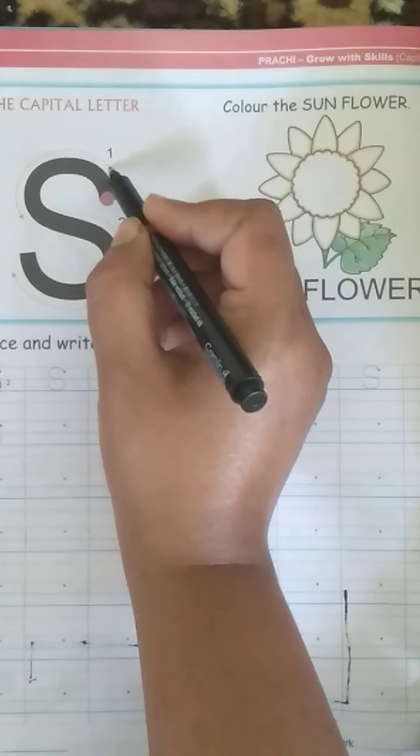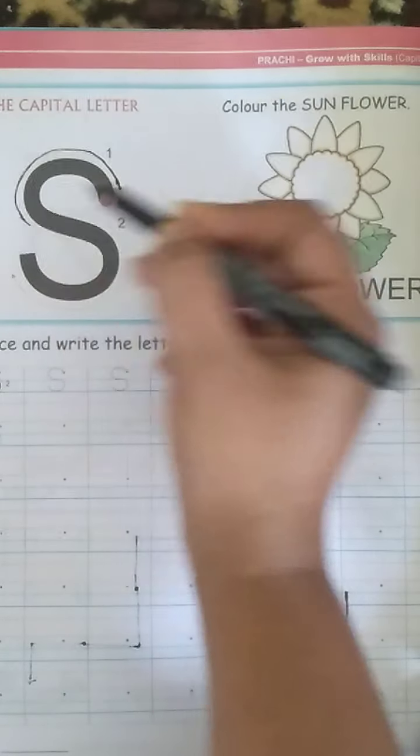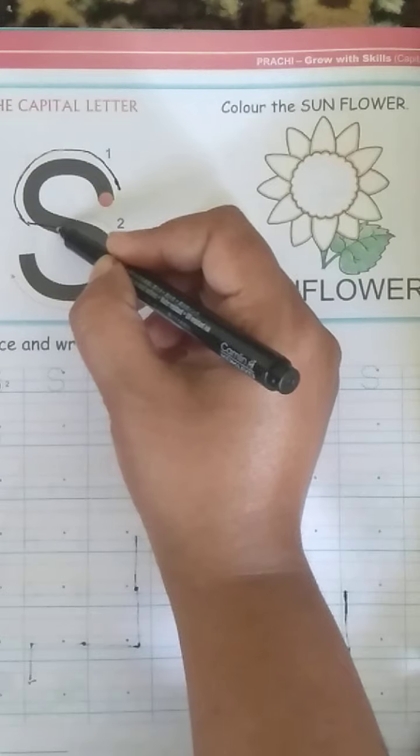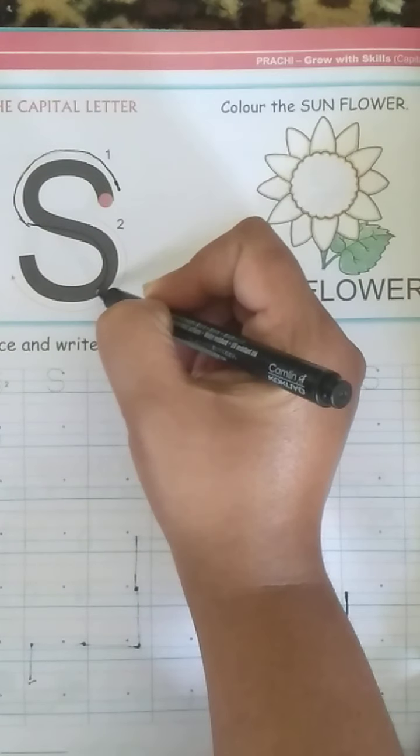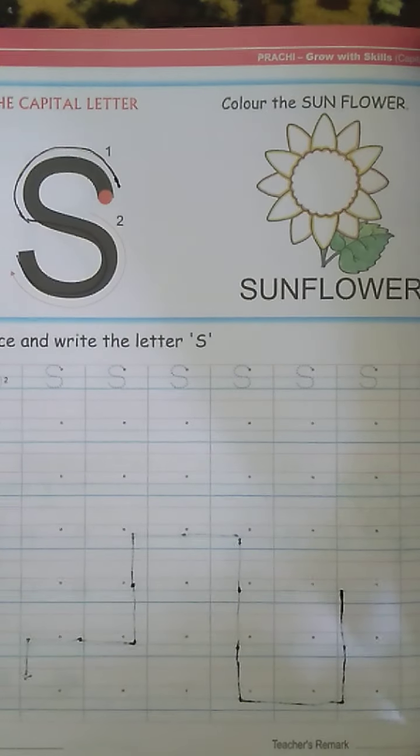Look at this picture. Start with the red dot and make a curve like this. And then start from here and then go around like this. This is how you write the letter S.